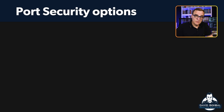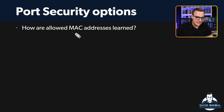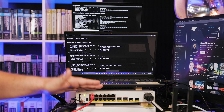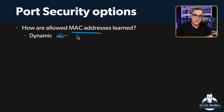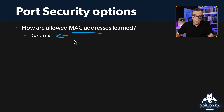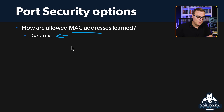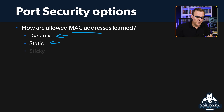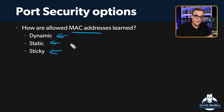There are a few things you need to understand with regards to port security. Firstly, how a MAC address is learned. I showed you an example with dynamic — basically, when traffic is sent by a PC, the switch learns the MAC address, and by default the first MAC address learned is permitted. You can also configure MAC addresses manually or statically, where you physically type in the MAC address. That's a lot of work, so you may prefer to use sticky, where the MAC address first learned is written to the configuration of the switch.